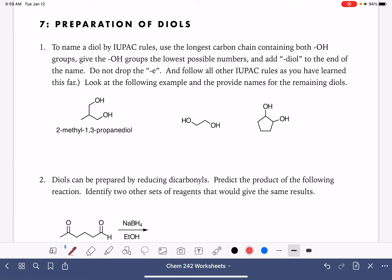A diol is a molecule that has two OH groups, di being the prefix for two and ol indicating alcohol or OH.